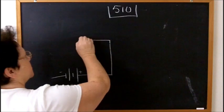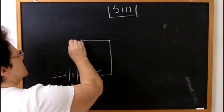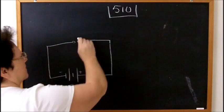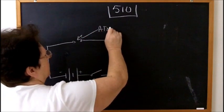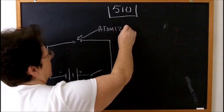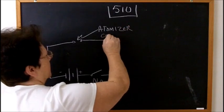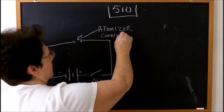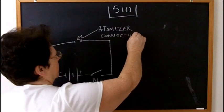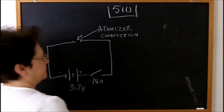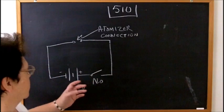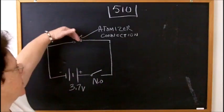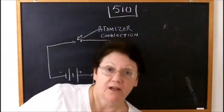Then we come up to an atomizer connection, and that's it. That's really it. You push the button, and the voltage goes to the atomizer from the atomizer connection, and you vape.